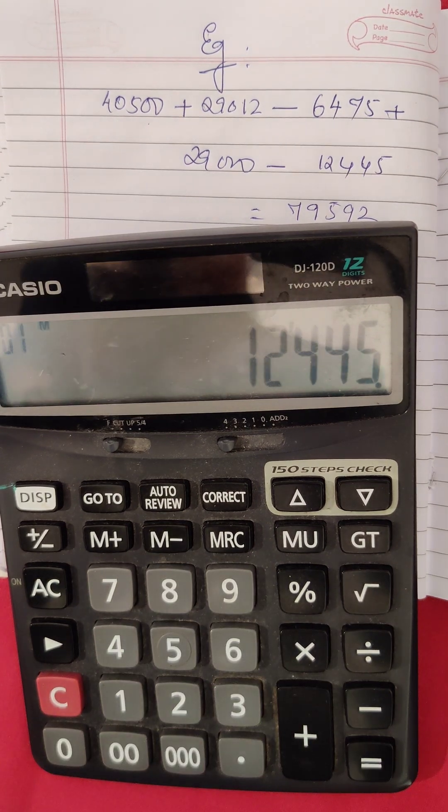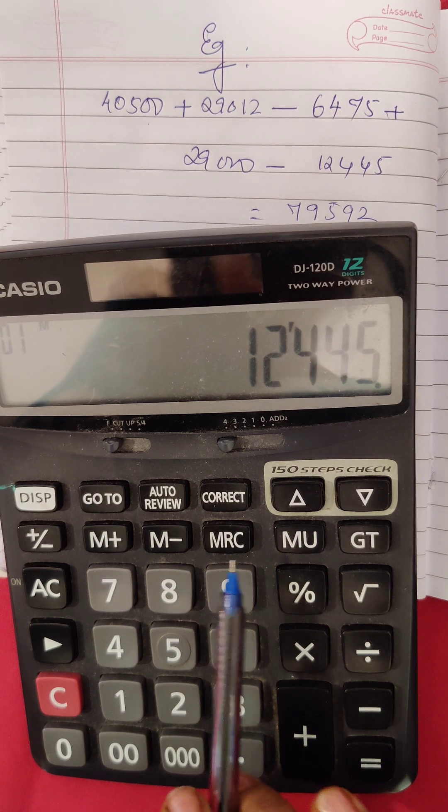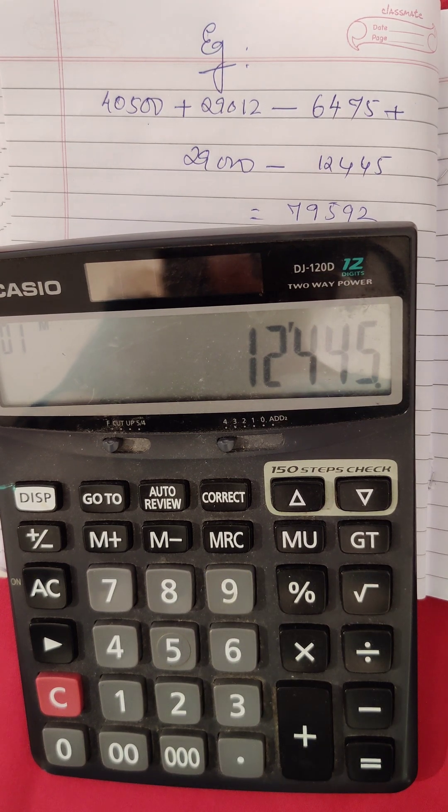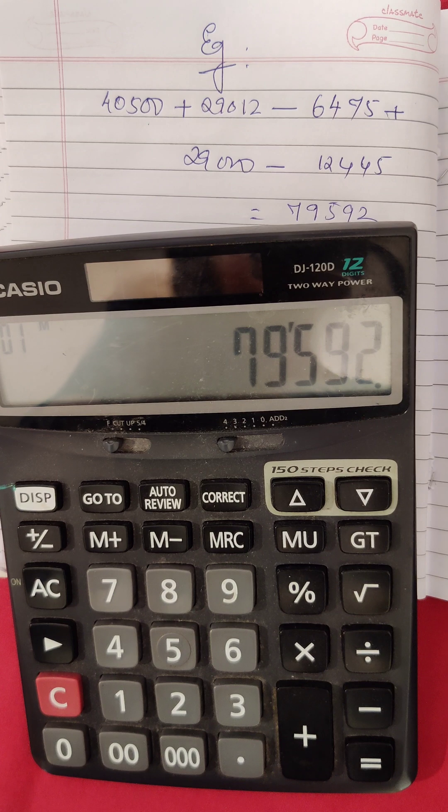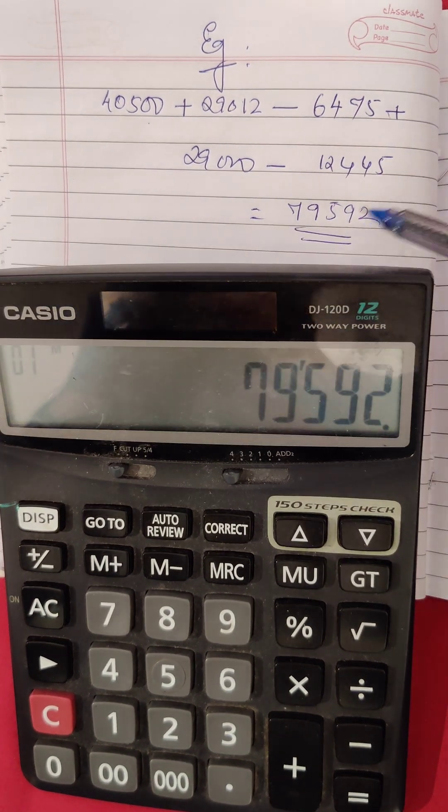Now we want to find out what is the result of all this. For that we use the button MRC, also known as memory recover. Click on that. You got the answer as 79,592.